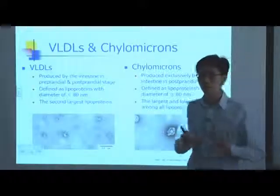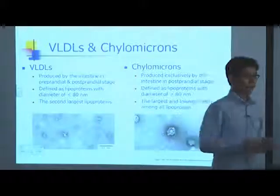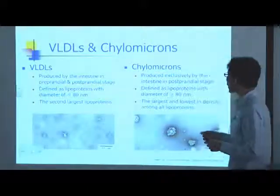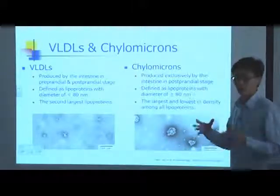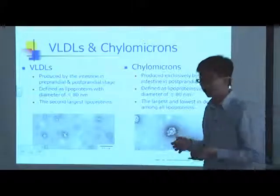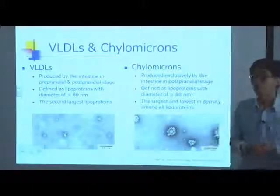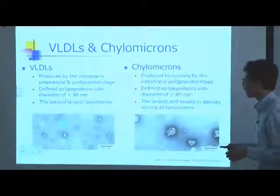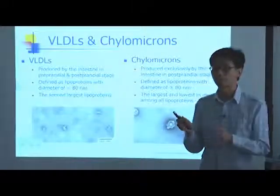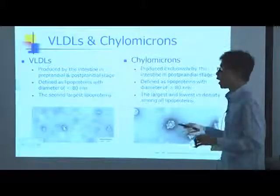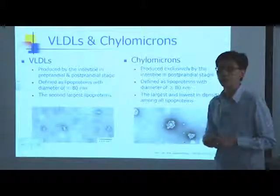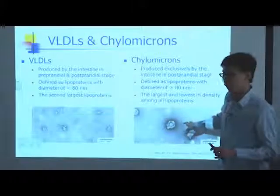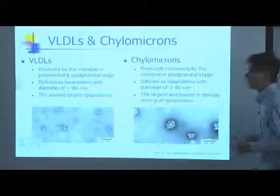I want to compare VLDLs and chylomicrons side by side. VLDLs and chylomicrons are both produced by our intestine. When we have a high-fat diet meal, the intestine mostly secretes fat as chylomicrons — the large particles. When we have a low-fat diet or are fasting, the intestine secretes fat as VLDL particles, which are relatively smaller. The definition is based on diameter: particles below 80 nanometers are VLDLs, and 80 nanometers or above are chylomicrons.